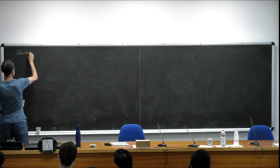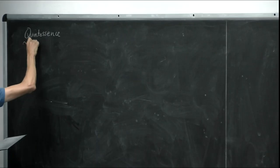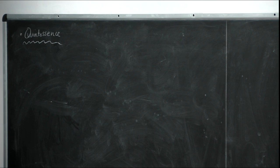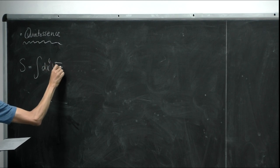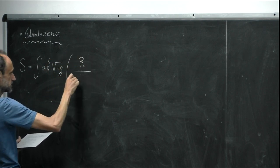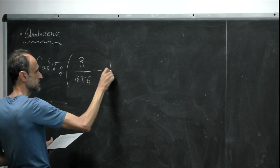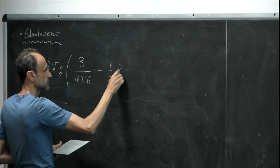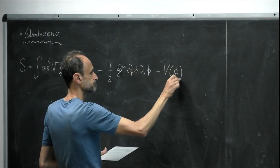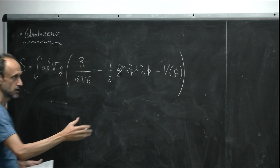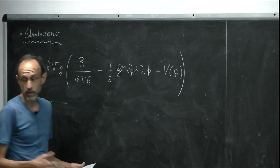I'll start with the simplest alternative, called quintessence. The idea is that we replace the cosmological constant with a dynamical scalar field. The action of the scalar field coupled to gravity includes the standard Einstein action plus a scalar field term. We write the full action with a potential V(φ), where this is the kinetic term and the potential determines the dynamics — very similar to what you've seen for inflation.